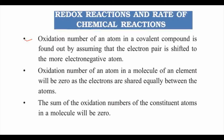Oxidation number of an atom in a covalent compound is found out by assuming that the electron pair is shifted from the less electronegative atom to the more electronegative atom. In covalent bonds, electron pairs are considered. Example: one reaction is H2 plus Cl2 gives 2HCl — hydrogen chloride formation. In covalent compounds, we assume that the electron pair is shifted to the more electronegative atom.